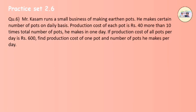Question 6: Mr. Kassam runs a small business of making earthen pots. He makes a certain number of pots on a daily basis. The production cost of each pot is rupees 40 more than 10 times the total number of pots he makes in one day. If the production cost of all pots per day is rupees 600, find the production cost of one pot and the number of pots he makes per day.